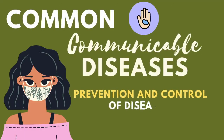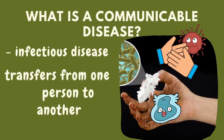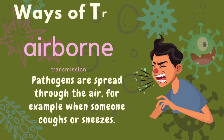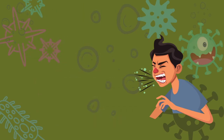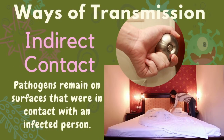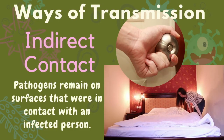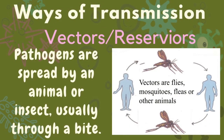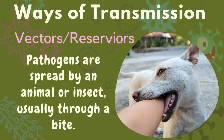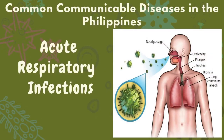Common communicable or infectious diseases can be transferred from one person to another in different ways: airborne transmission, where pathogens are spread through the air when someone coughs or sneezes; direct contact, which is exposure to infected body fluids such as blood or saliva; indirect contact, where pathogens remain on surfaces that were in contact with an infected person; vector-borne, where pathogens are spread by an animal or insect, usually through a bite; and food and water, which can become contaminated with germs, making people sick when they eat or drink them.